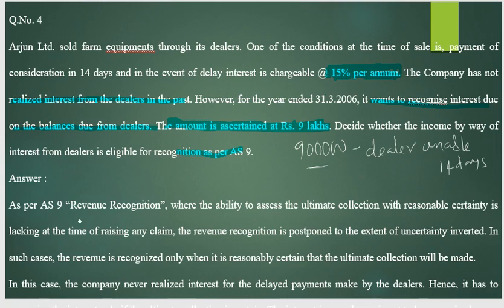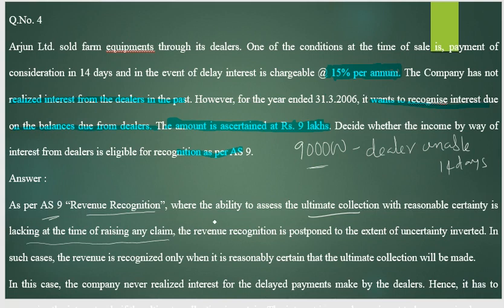As per AS-9, recognition of revenue requires the ability to assess ultimate collection with reasonable certainty. At the time of raising the claim, you must reasonably expect to collect the revenue — not erratically or aggressively, but with reasonable certainty.